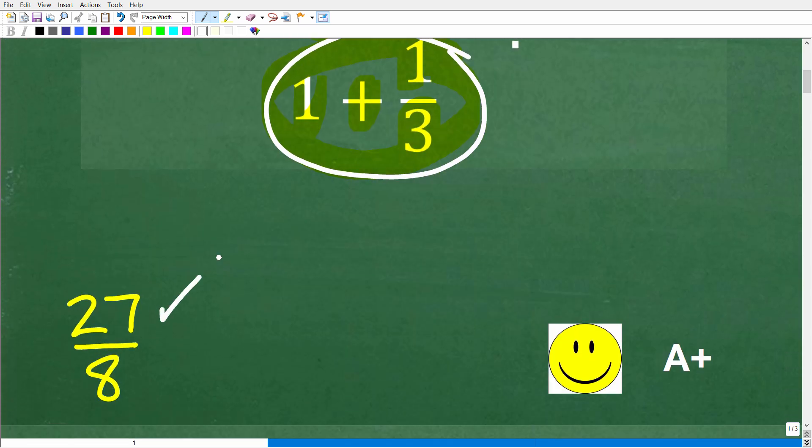The correct answer is 27 over 8. Now, if you got a mixed number fraction as your answer, just make sure it's equivalent to this right here. But if you got this right, that is super good. You're definitely going to get a heavy face and an A plus.